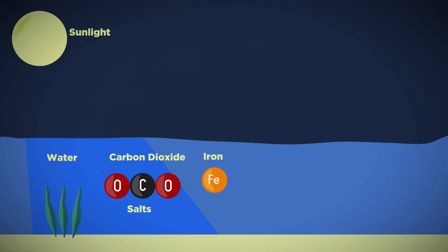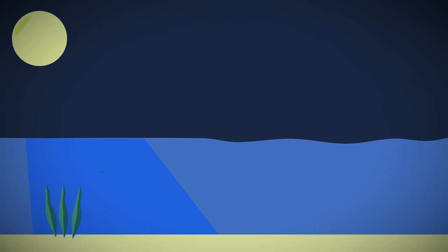However the element iron is missing because most iron salts are insoluble and green algae need iron in tiny amounts to build their bodies.